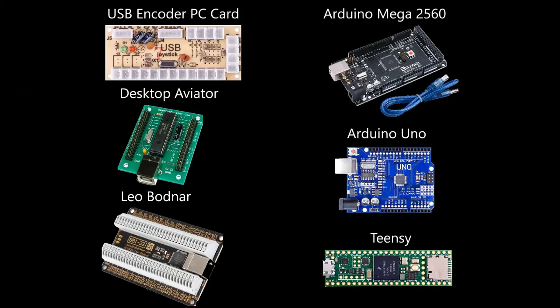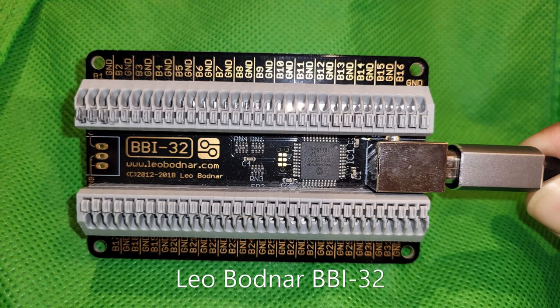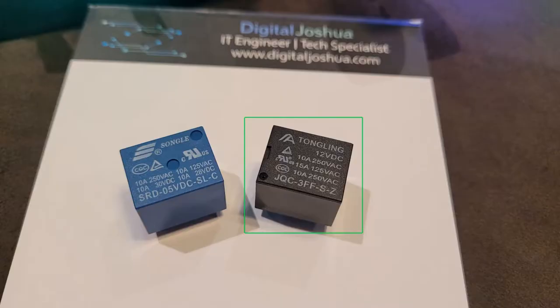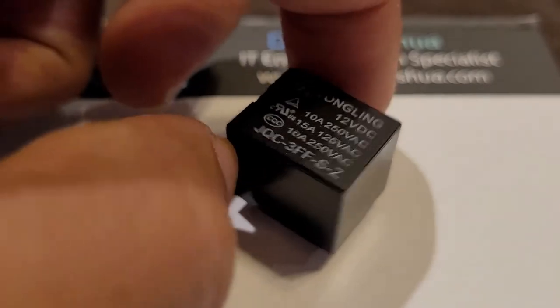Here is a list of the items we will need. A USB interface card, either a Leo Bodnar or an Arduino. In this video we will be using the Leo Bodnar BBI-32. A 5 pin single pole double throw 12 volt relay, but also a 5 volt relay can be used. Please make sure to always purchase high quality components rated for continuous operation.